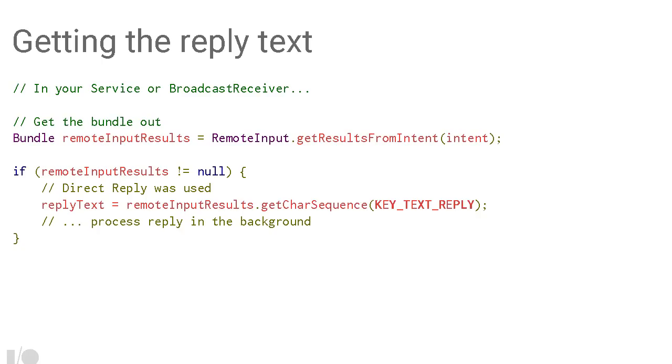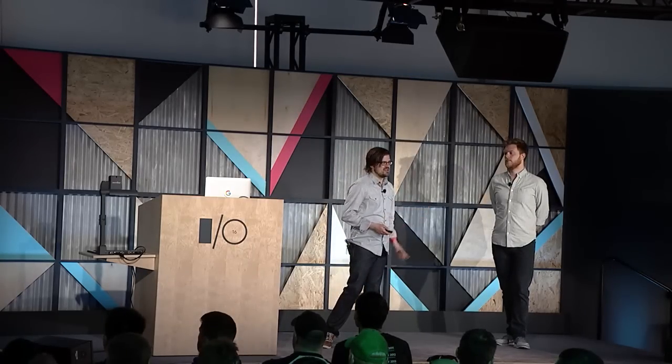When you've got your broadcast receiver, just make sure you use the method RemoteInput.getResultsFromIntent — that's how you extract that text back out. All of this sample code is taken directly from our developer docs. If you download DP3, the developer preview for Android, all of this stuff will be in there, and you can pull it directly into your app to get remote input running.